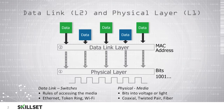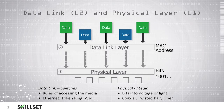The data link layer is concerned with rules of accessing the media, and the protocols that work at this layer are Ethernet, Token Ring, and Wi-Fi. The physical device used at the data link layer is a switch. At the data link layer we use MAC addresses, or media access control addresses, which are hardware addresses for our network interface cards that allow them to be identified on the network by the switches.